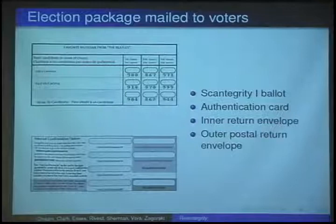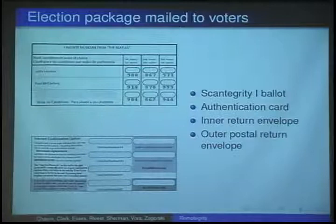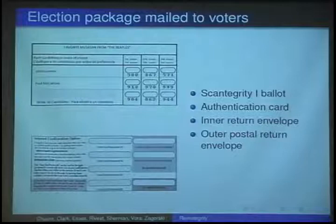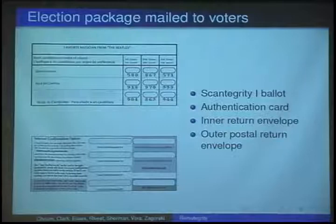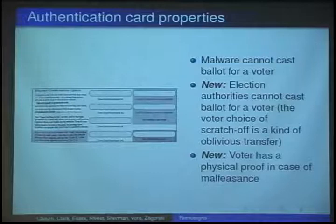In this system, a voter gets an election package mailed to them, which consists of a Scantegrity type 1 ballot, an authentication card, and some envelopes. A voter can fill up the ballot, put it back into an envelope, and send it back as in traditional mail-in voting systems. But they can also use the authentication card together with the encoded Scantegrity ballot to cast their vote online.